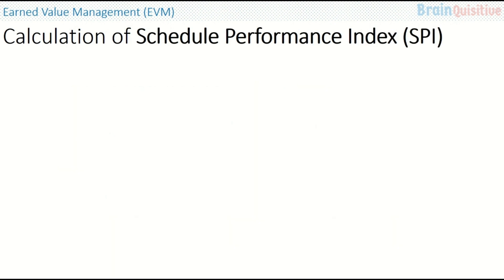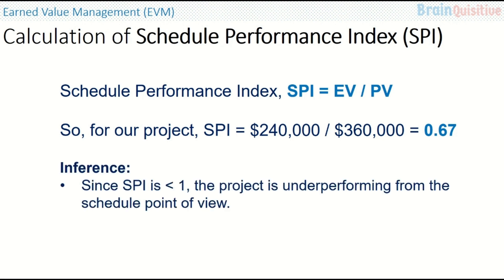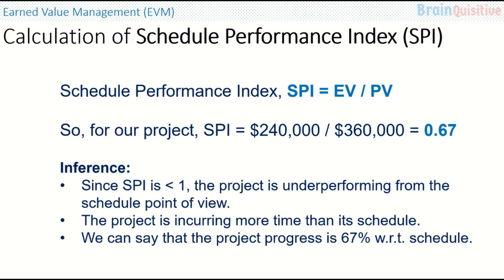Now, what is the Schedule Performance Index, or SPI? This is EV divided by PV. For our case, it is 240,000 divided by 360,000, which is 0.67. Since this is less than 1, the project is underperforming from the schedule point of view as well. If it is equal to 1 then it is on track, and if it is greater than 1 then the project is ahead of schedule. In this case the project is incurring more time than its schedule, so it is behind schedule. We can say the project progress is 67% with respect to the schedule.